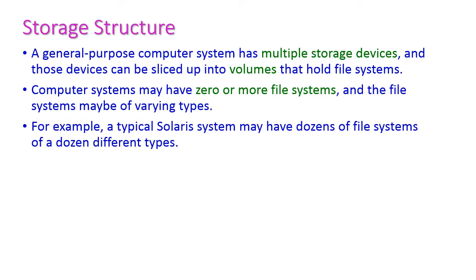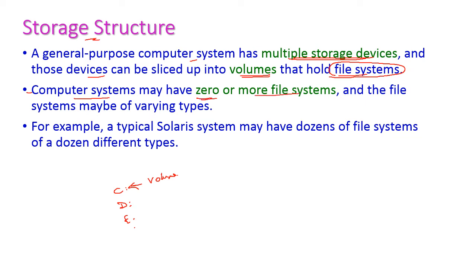Now let us see the storage structure. A computer system has multiple storage devices, and these devices can be sliced up into volumes that hold the file system. For example, in our computer system we have C drive, D drive, E drive, and so on — each drive is called a volume and each volume may hold a file system. A computer system may have zero or more file systems; we can follow a single file system for all drives or a separate file system for each drive. For example, the Solaris system may have dozens of file systems of dozens of different types.